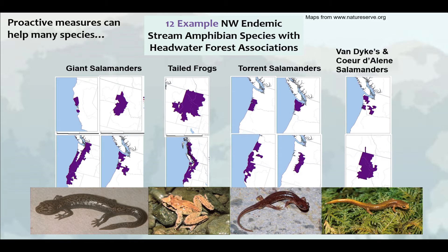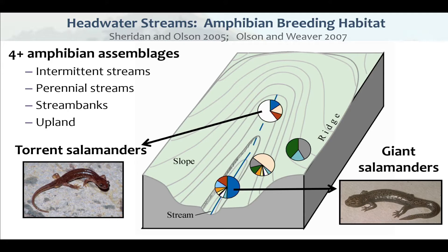Other species also occur in headwater drainages: a perennial stream associated assemblage, an intermittent stream associated assemblage, a bank assemblage, and an upland assemblage of amphibians highly associated with down wood and rocky substrates — cool, wet micro-habitats. So it gets more complicated: you have more than just fish in the landscape. These are endemic species to the northwest; they don't occur elsewhere, and some are trending towards listing.